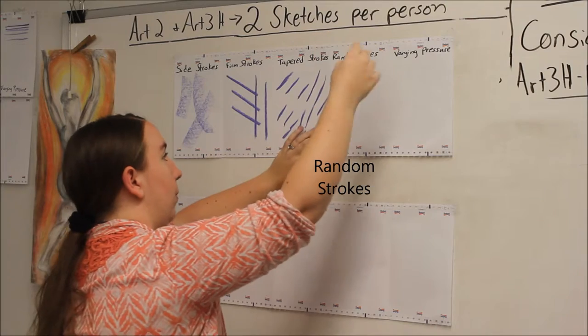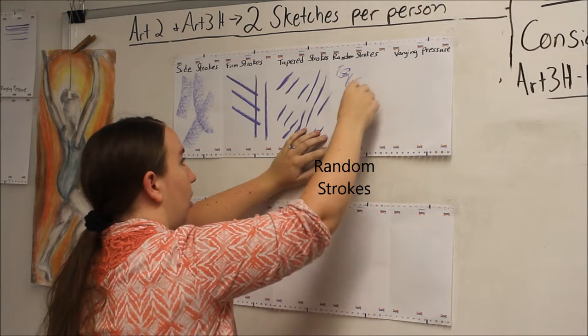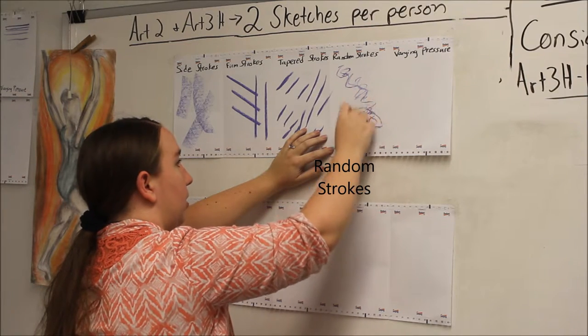So it should be fairly loose and also can keep your wrist light as you do the random strokes. So light grip, light wrist, and you're kind of just letting the pastel catch on the paper, since it's kind of a blocky form, letting it catch as it goes.